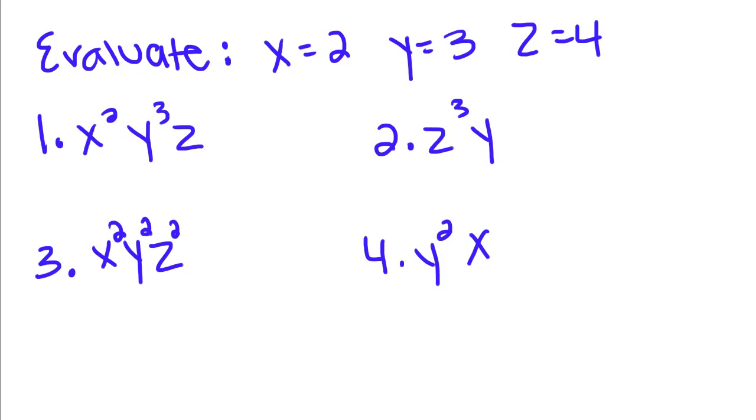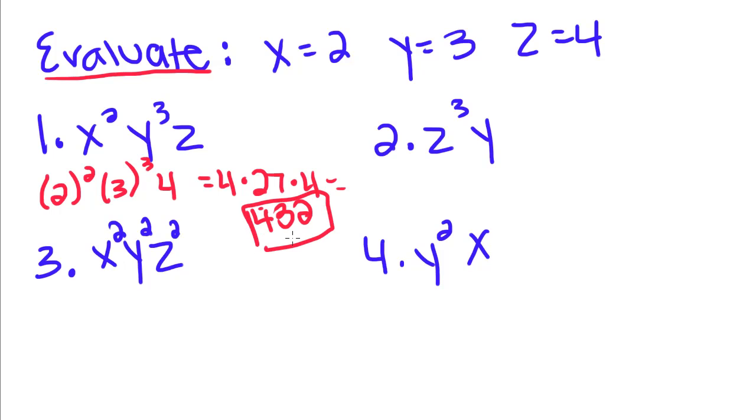So now we're going to do some work with exponents. When it says evaluate, it means plug in these numbers and find out what it equals. So we're going to plug in 2 for x, so we have 2 squared times 3 cubed times 4. So 2 times 2 is 4, this is equal to 4, 3 times 3 is 9, times 3 is 27, times 4. And I'm going to put that in the calculator, because that's going to be a kind of big number. 4 times 27, 432. Exponents get really big really fast.